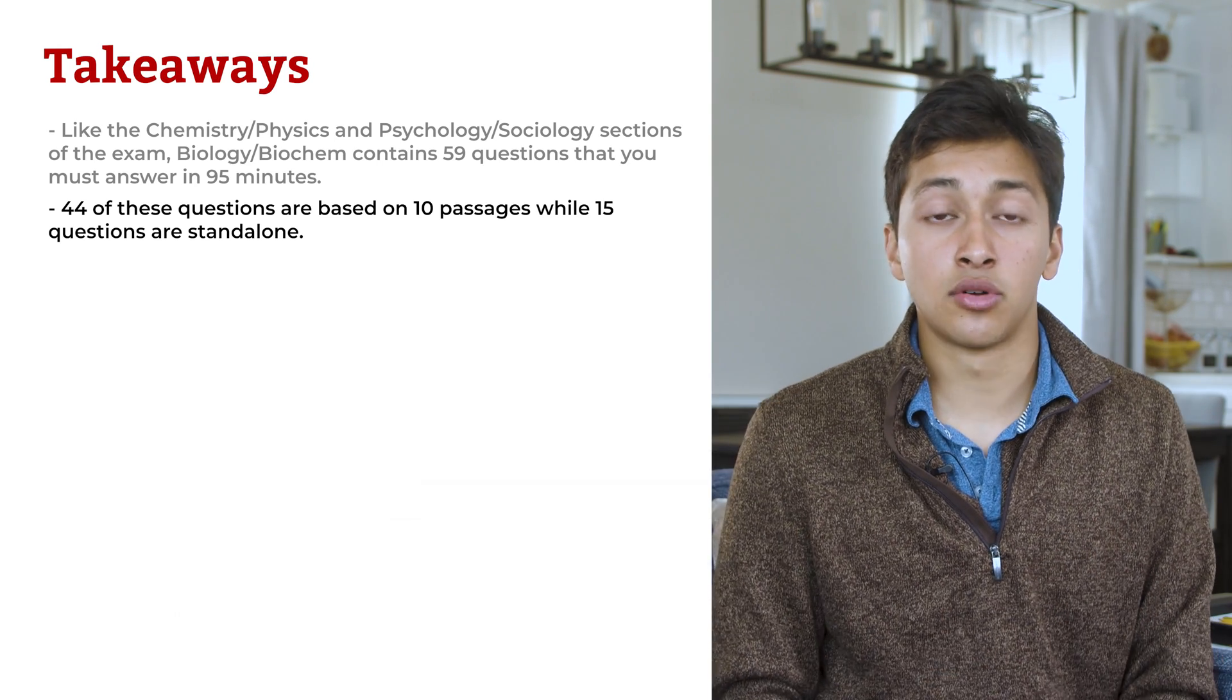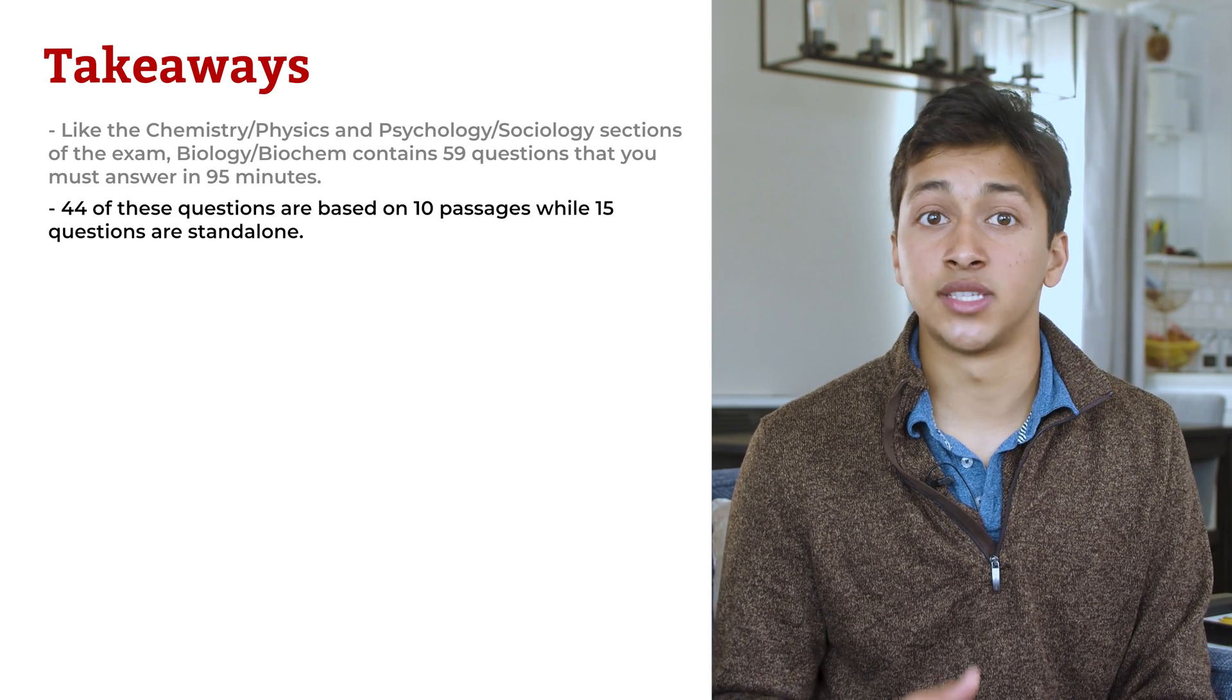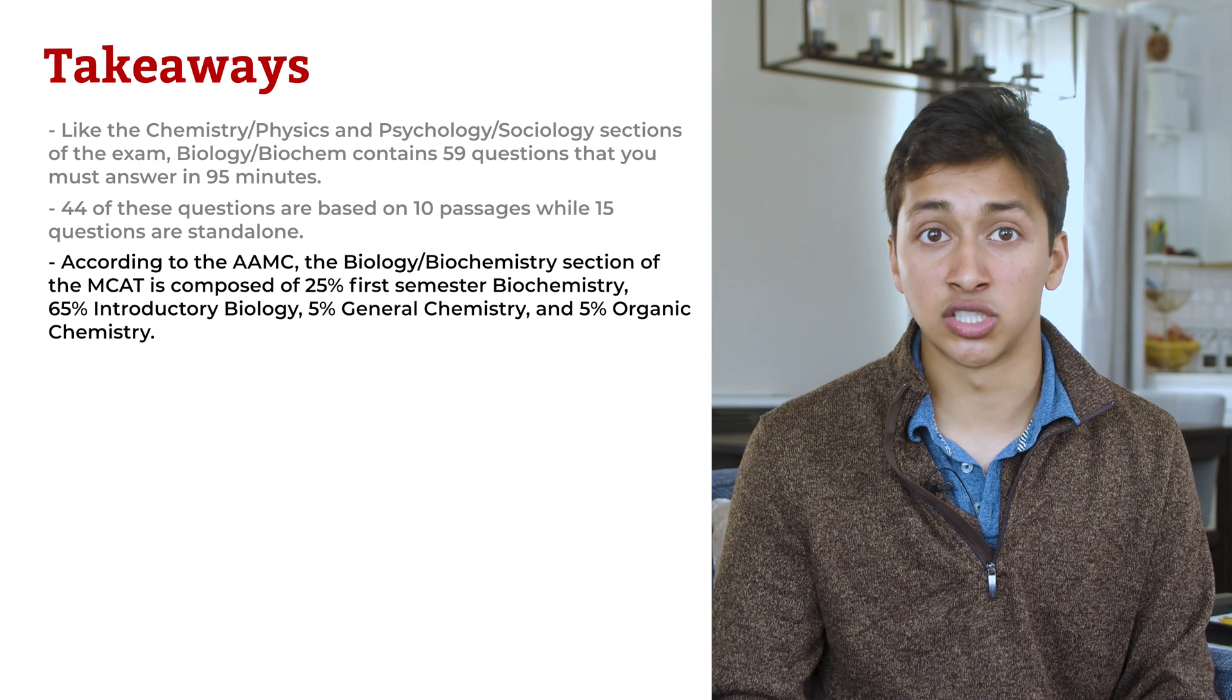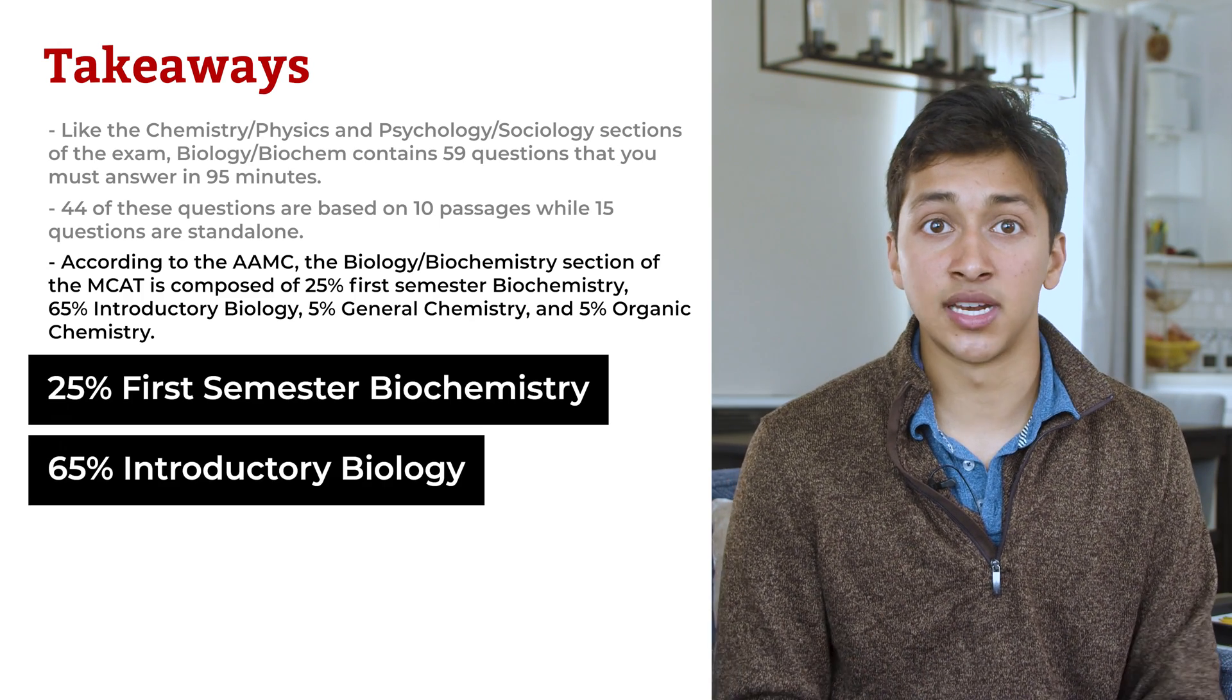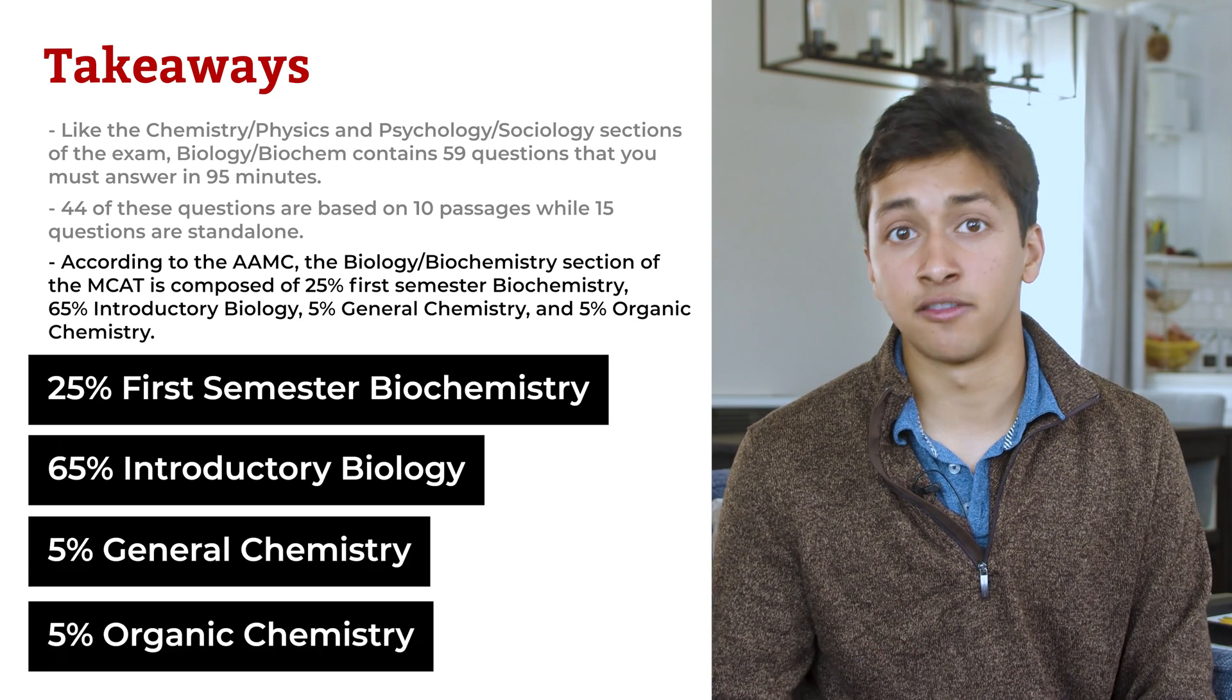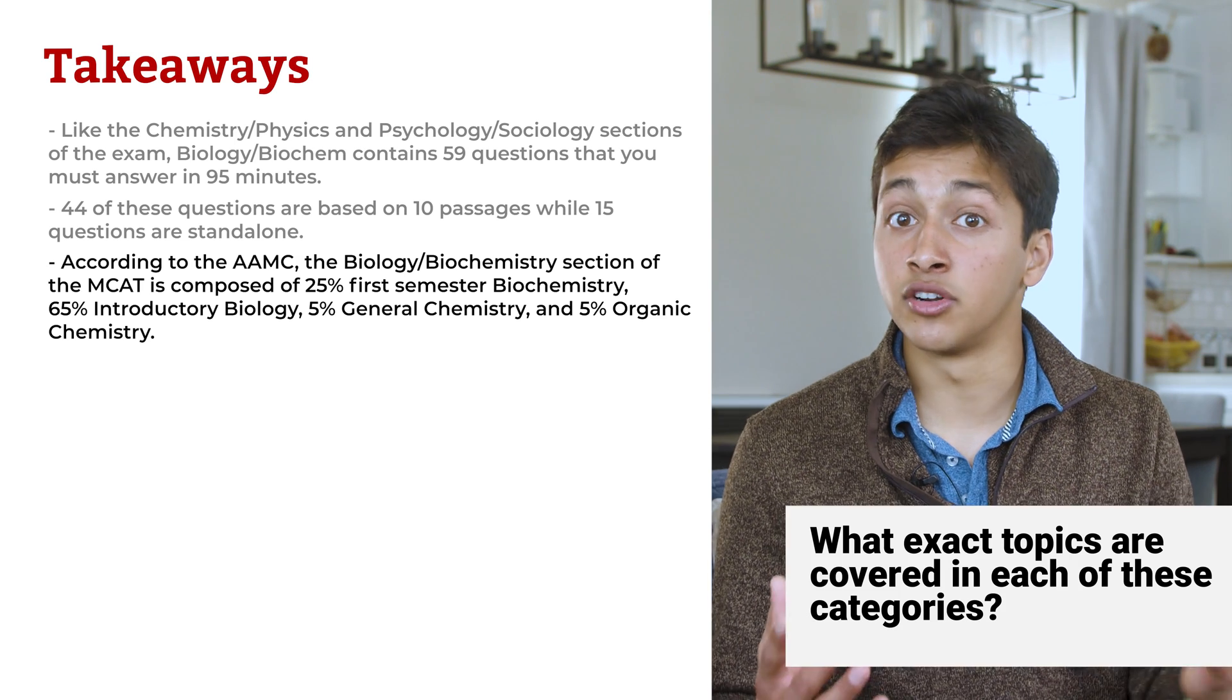The American Association of Medical Colleges, or AAMC, writes the MCAT and they break down what's actually going to be on your exam. According to the AAMC, the Biology Biochemistry section of the MCAT is composed of 25% first semester biochemistry, 65% introductory biology, 5% general chemistry, and 5% organic chemistry. You might be wondering what exact topics are covered in each of these categories.